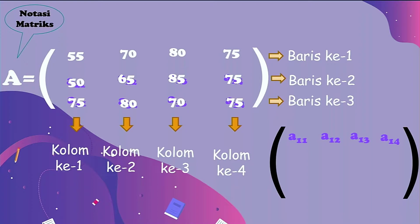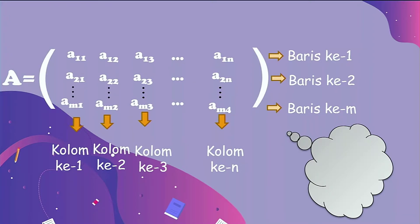70 di baris pertama kolom kedua, maka A₁₂. 80 baris pertama kolom ketiga, A₁₃. 75 baris pertama kolom keempat, A₁₄. Berikutnya, angka 50 berada di baris kedua kolom pertama, menjadi A₂₁. Angka 65 menjadi A₂₂, 85 menjadi A₂₃, 75 menjadi A₂₄. Pada baris ketiga: 75 menjadi A₃₁, angka 80, 70, dan 75 juga memiliki notasi pada baris ketiga.